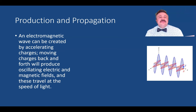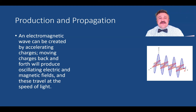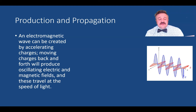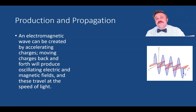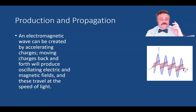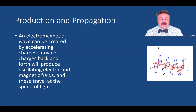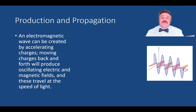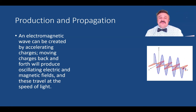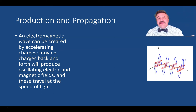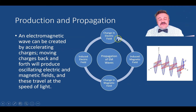If we have an accelerating charge — accelerating means changing direction, speeding up, or slowing down — and we move a charge back and forth, we're going to produce an oscillating electric field, which will then produce an oscillating magnetic field. These travel together at the speed of light and in phase.